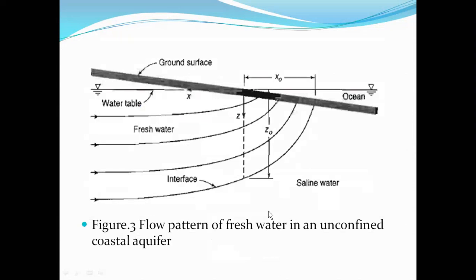In the figure, Z₀ is the depth of the interface beneath the shoreline. The interface line separates the fresh water flowing towards the shoreline and the saline ocean water. This is the exact interface between the fresh and saline water, the groundwater table, and the ground surface.